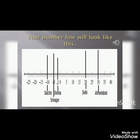On the number line: at minus 2 degrees is Shimla, minus 5 is Srinagar, minus 10 is Siachen, and on the positive side, 20 degrees is Delhi and 30 degrees is Ahmedabad.